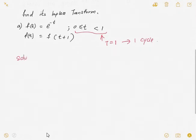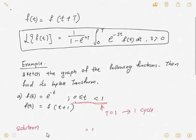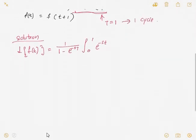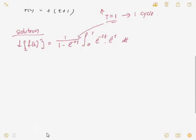How do we solve this question? The Laplace transform of F(t) is equal to 1 over (1 minus e^(-sT)), integrating from 0 to 1. Following the equation from 0 to 1, you have e^(-st) multiplied by F(t), which is e^(-t), so you multiply with e^(-t) dt.